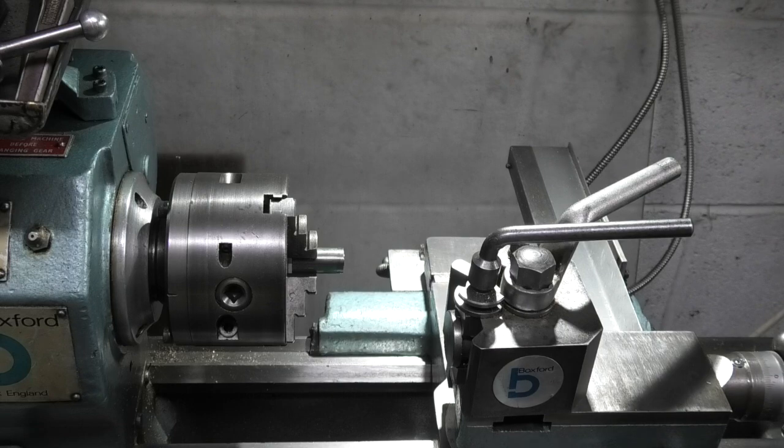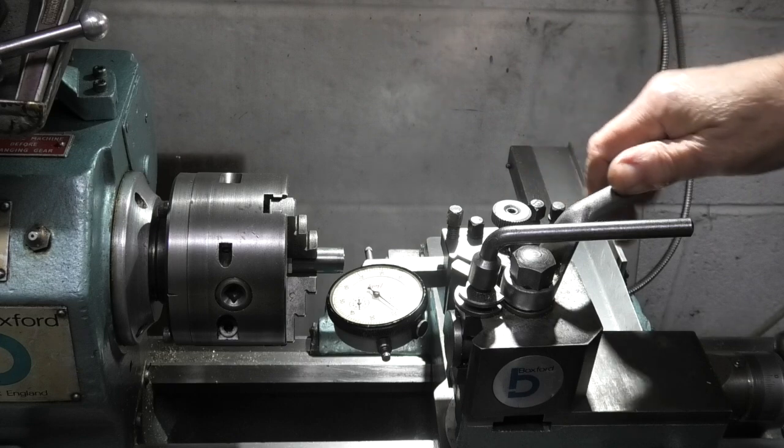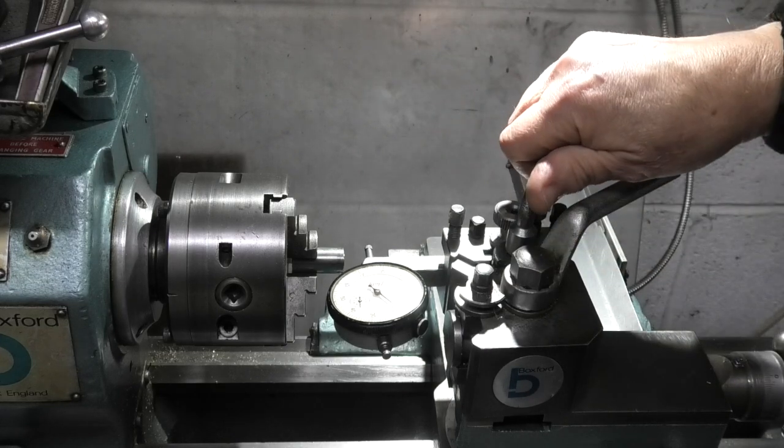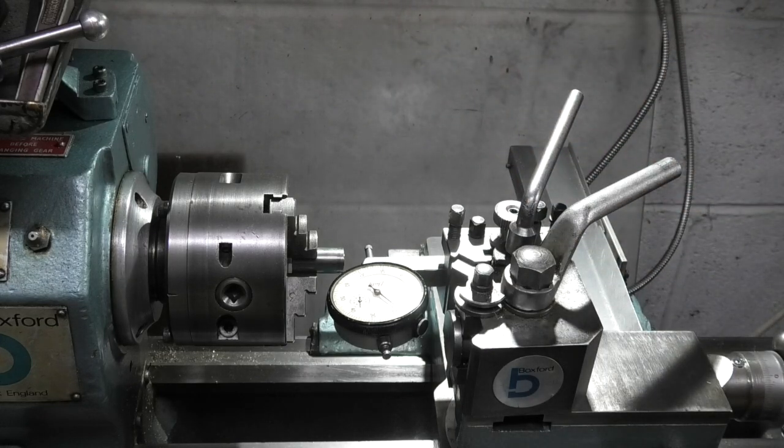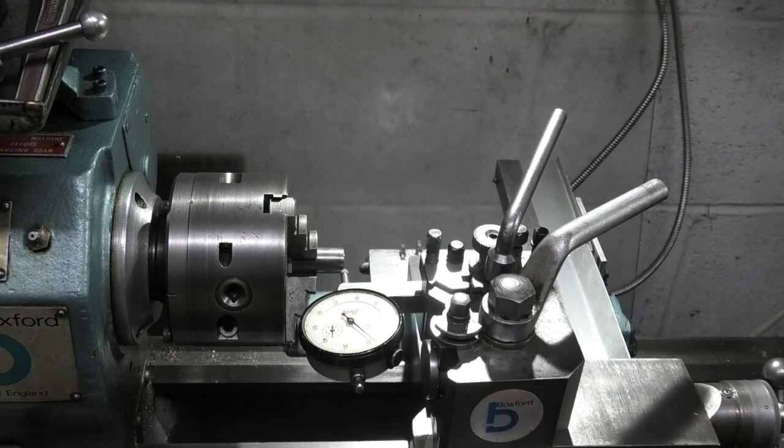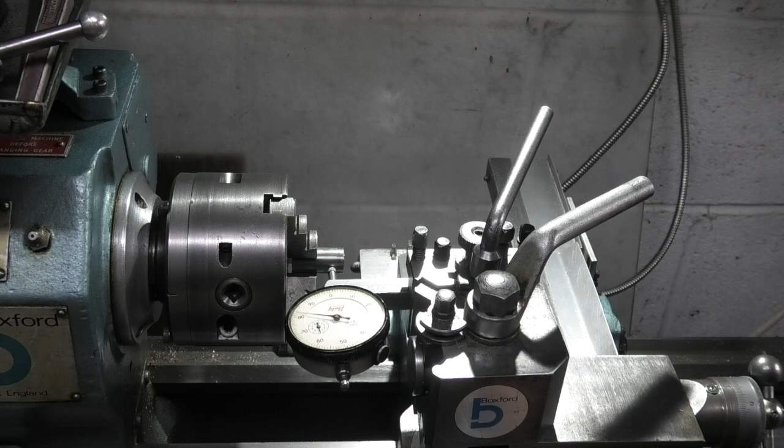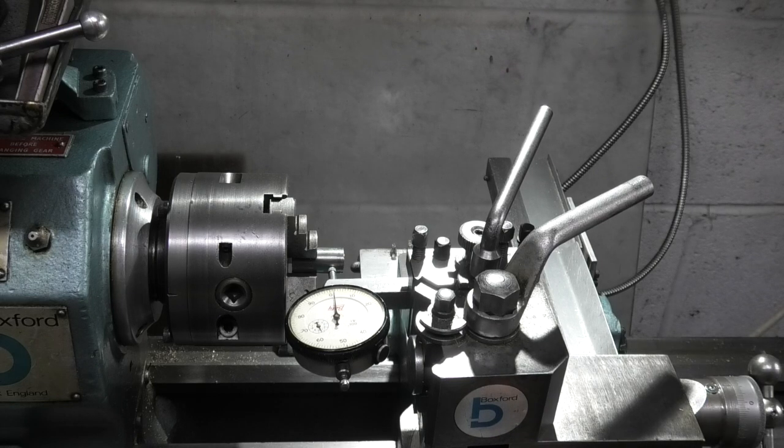So I'll just hold my dial indicator in the tool post and lock that up. Move it across so it's touching. Let's move that to zero. I'll zero that there.